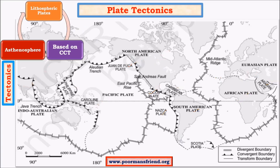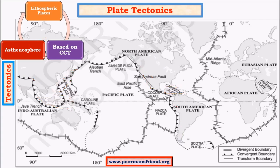All these plate interactions are very important because they explain the formation of mountains such as the Rockies, Andes, and Himalayas — fold mountains — as well as the formation of islands like the Indonesian archipelago, Philippine islands, Japanese islands, and Caribbean islands. To understand the formation of various landforms it is essential to know about plate tectonics. These lithospheric plates are floating on a ductile medium called the asthenosphere, which is in a semi-molten or plastic state and offers less resistance to the upper lithospheric plates, aiding their movement.